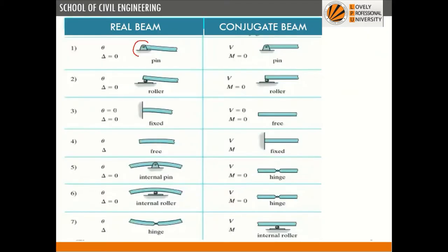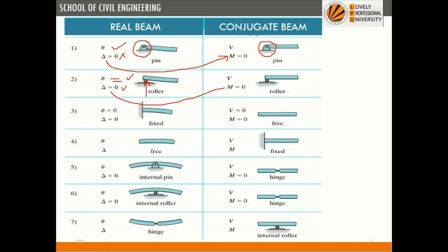At a pin joint, there is rotation but deflection is zero. In the conjugate beam, for deflection to be zero, moment must be zero — so we continue with the pin joint. Vertical deflection is zero in the real beam, which corresponds to moment being zero in the conjugate beam.